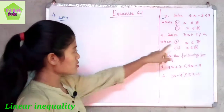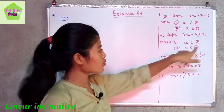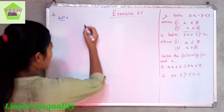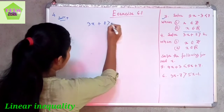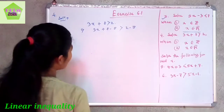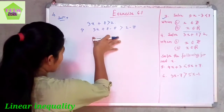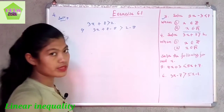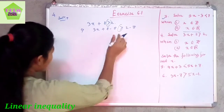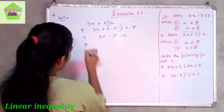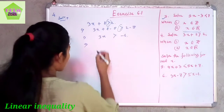Question number 4: solve 3x plus 8 greater than 2, when x belongs to the set of integers and when x belongs to the set of real numbers. The given linear inequality is 3x plus 8 greater than 2. Since adding or subtracting equal numbers on both sides keeps the sign the same, we subtract 8 from both sides to get 3x greater than minus 6.